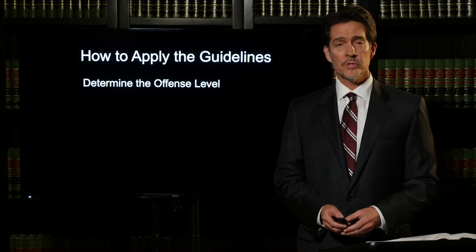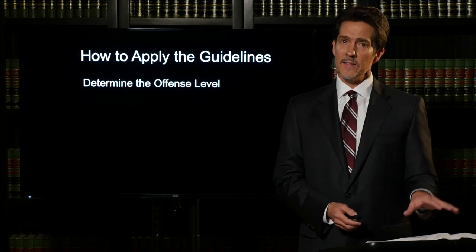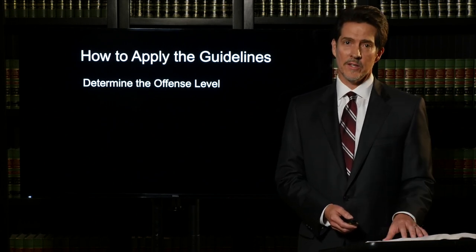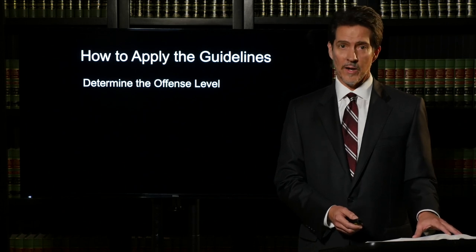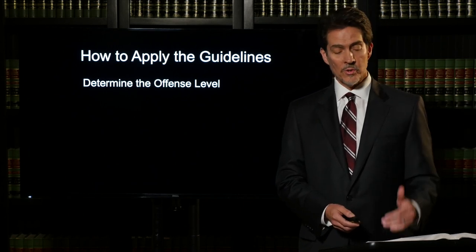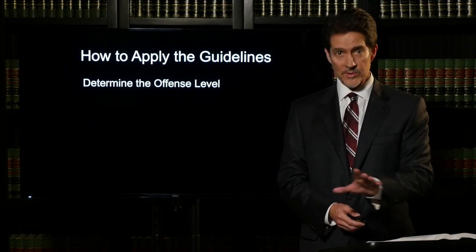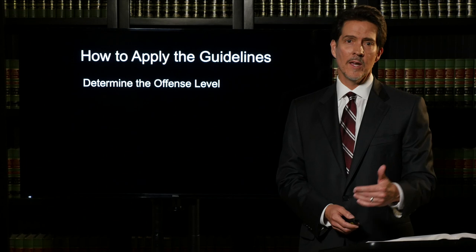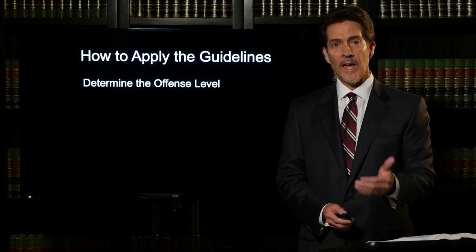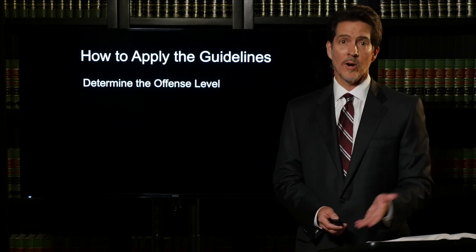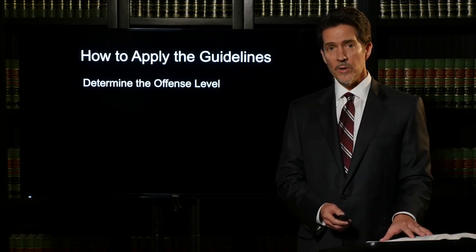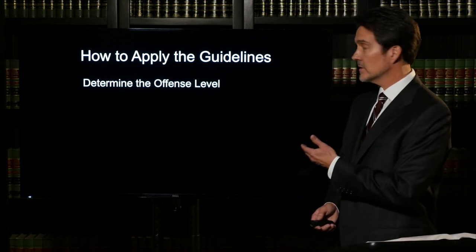In a fraud case, you usually start with a base offense level of seven. Then you take that base offense level and add or subtract depending on what else is in that guideline section. In a drug case, the quantity of drugs will increase the base offense level. In a fraud case, the offense level increases based on the amount of money involved and specific offense characteristics — for example, if money was stolen from a government agency, you add points; in a drug case, if a firearm was involved, you add points.